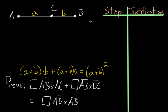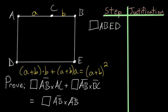So let's start this proof by first constructing a square with the line AB. So we can call this ABED, and we can do this because of Book 1, Proposition 46.